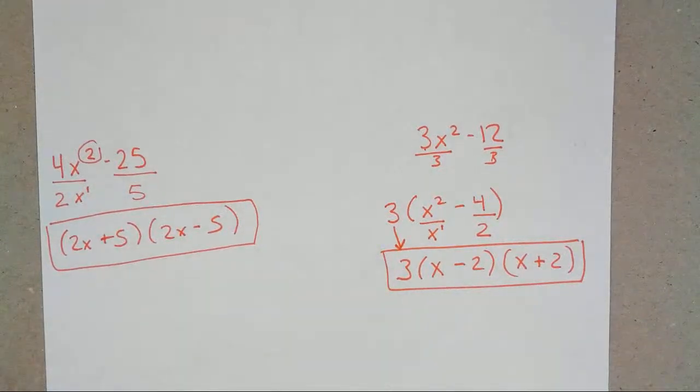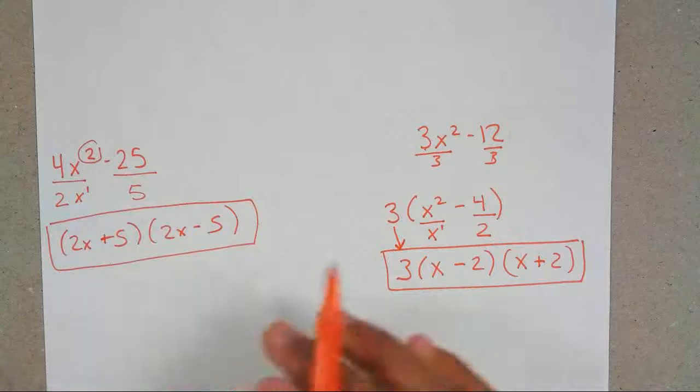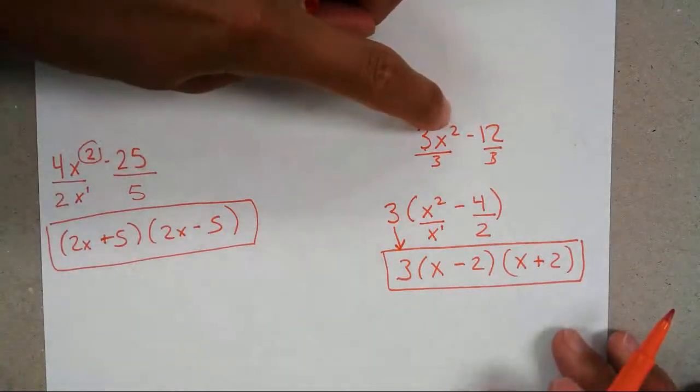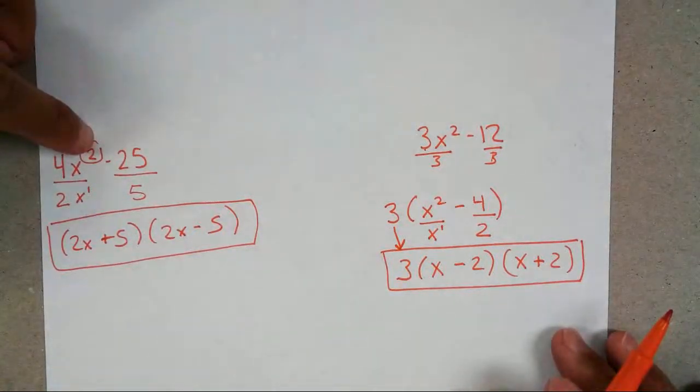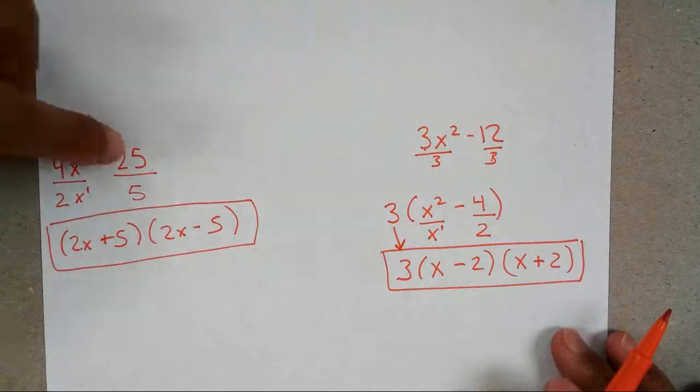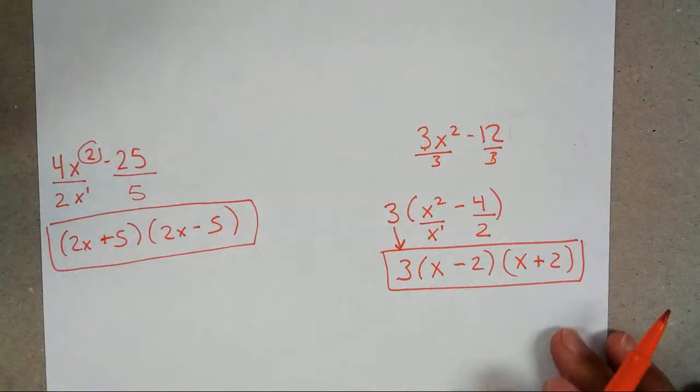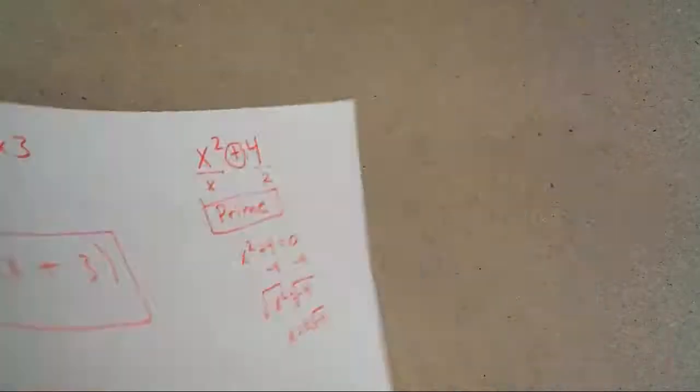So when you have a difference of squares, you want to make sure that you notice that your exponents can be divisible by 2, meaning 2 can go into it. And your numbers are perfect numbers, perfect squares. What we're going to do now is two more examples. This is when the math gets a little bit more complicated because they introduced another variable.